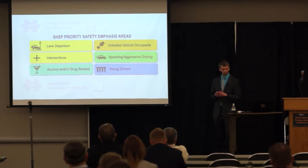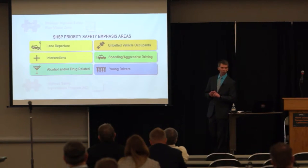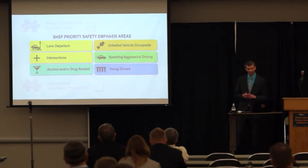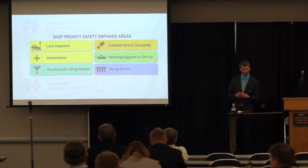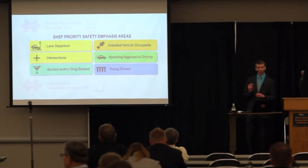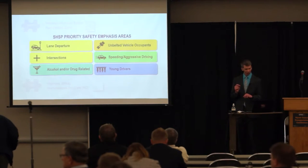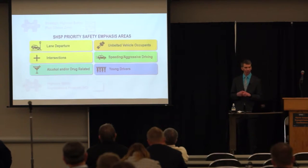In the Vision Zero Plan, there are safety emphasis areas — six main areas in the safety plan. The two I really want to talk about today are more related to the infrastructure side, shown in the yellow boxes on the left. Those would be lane departure, which accounts for most fatalities in North Dakota, and intersections. The other four are more related to the behavioral side.